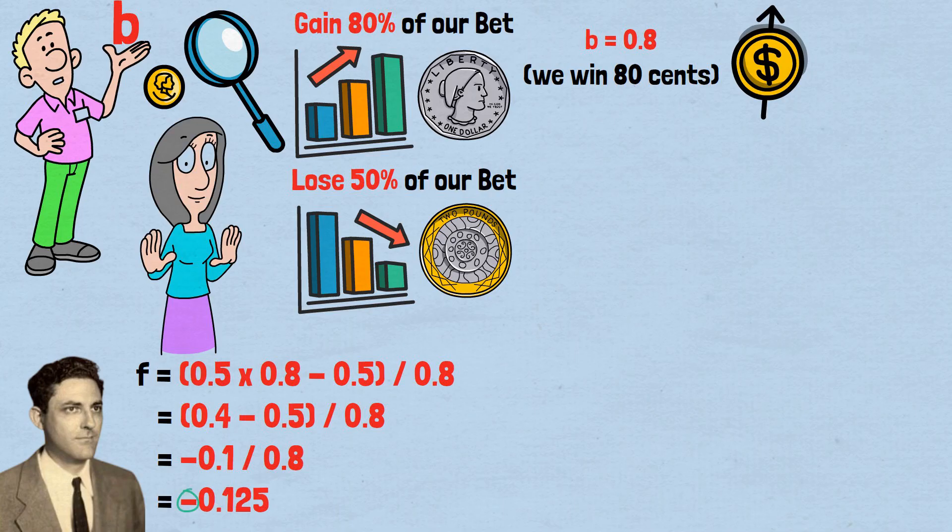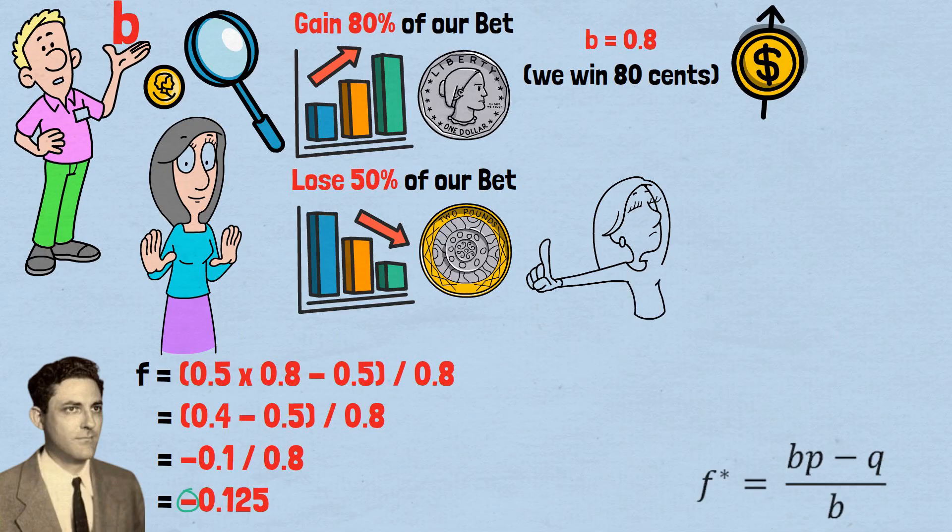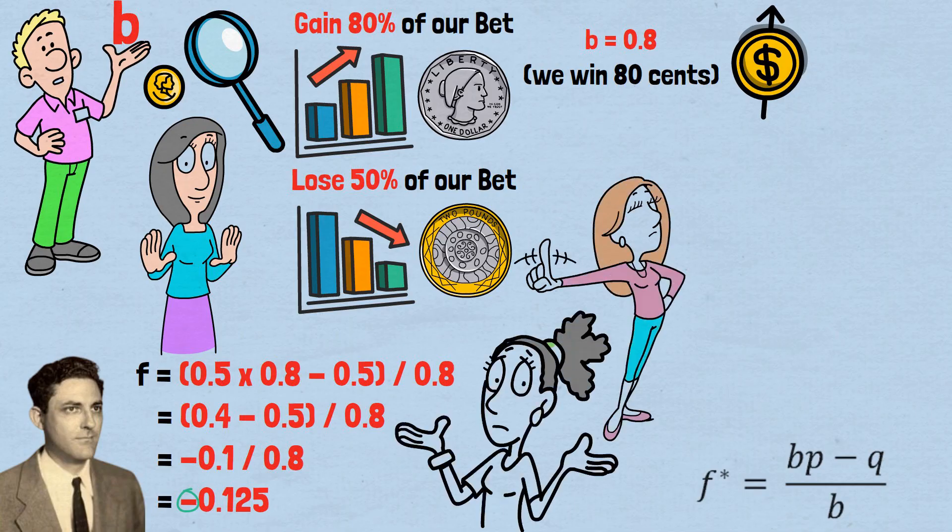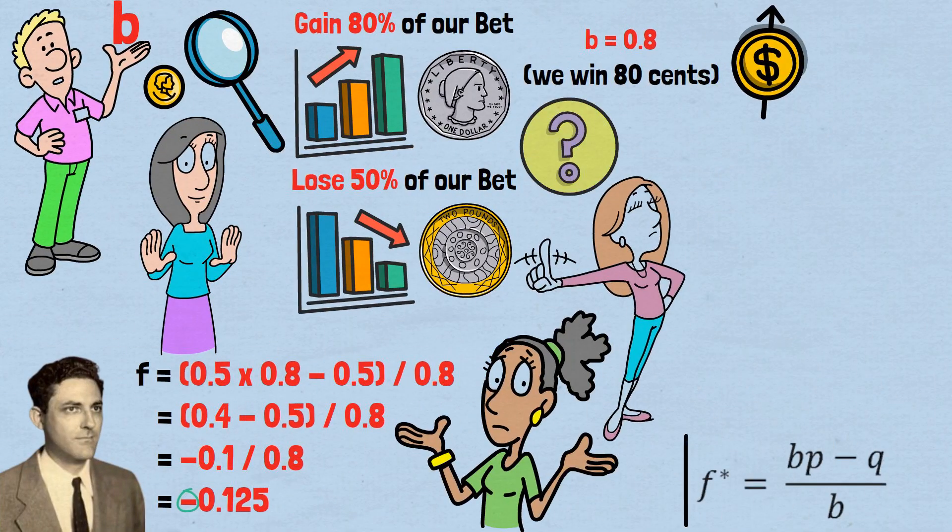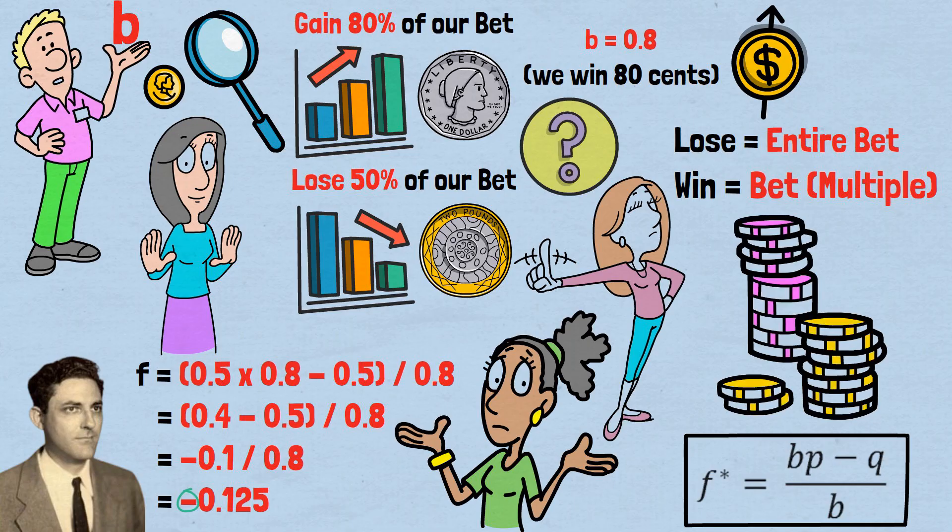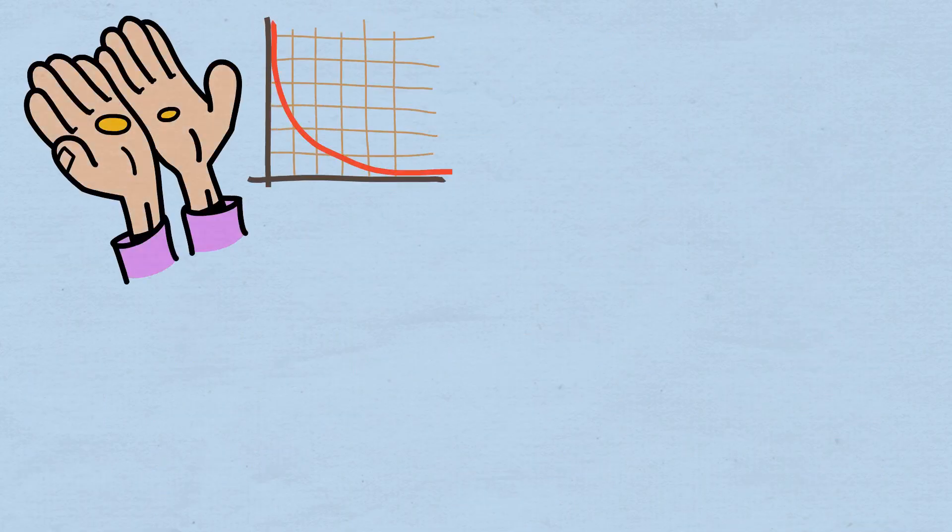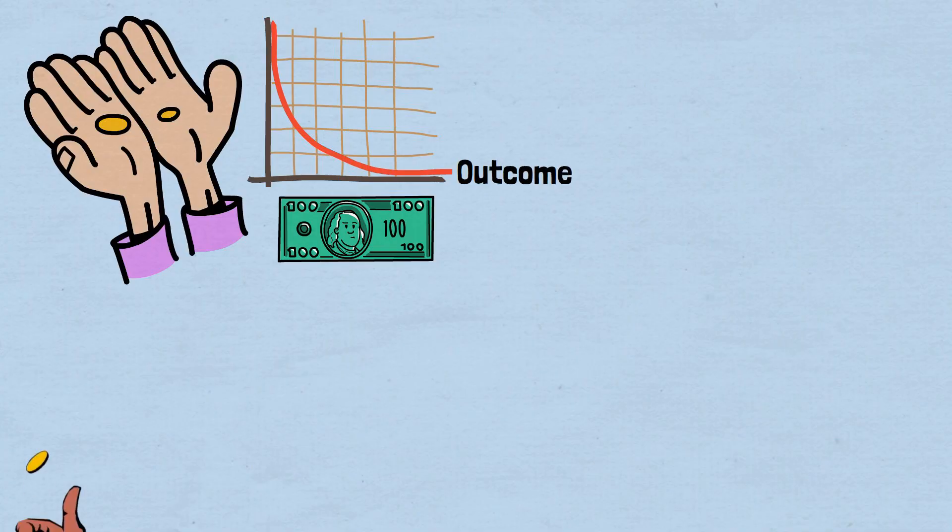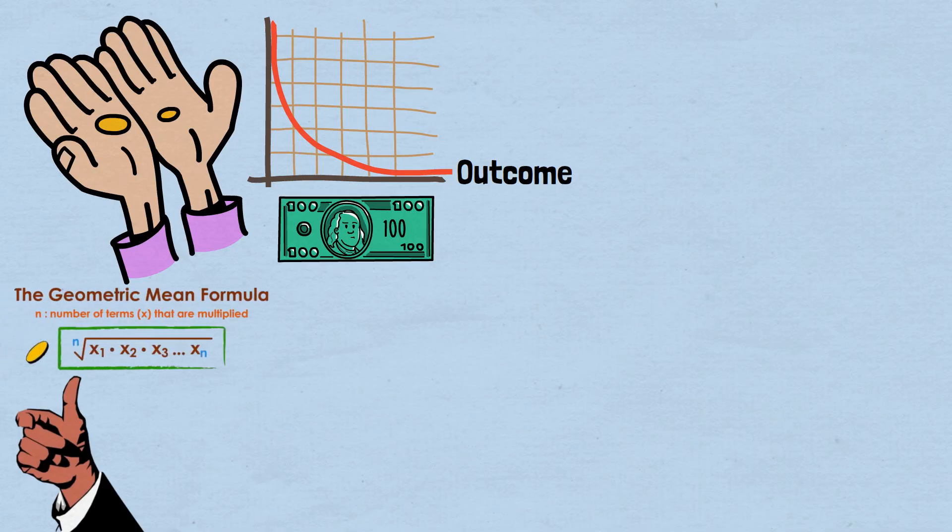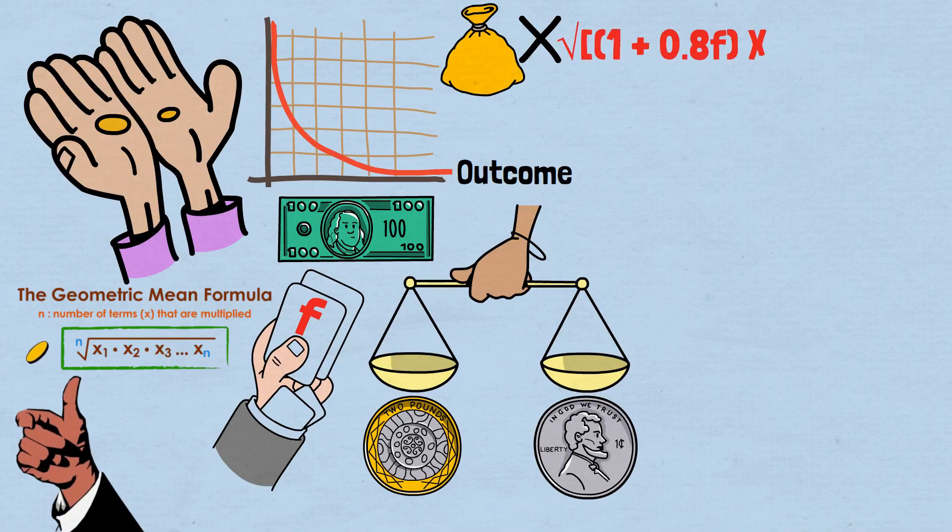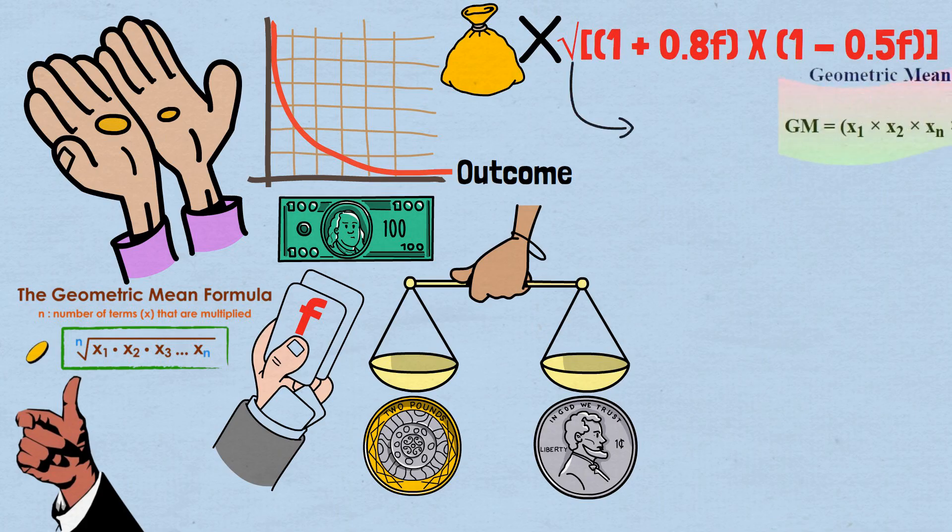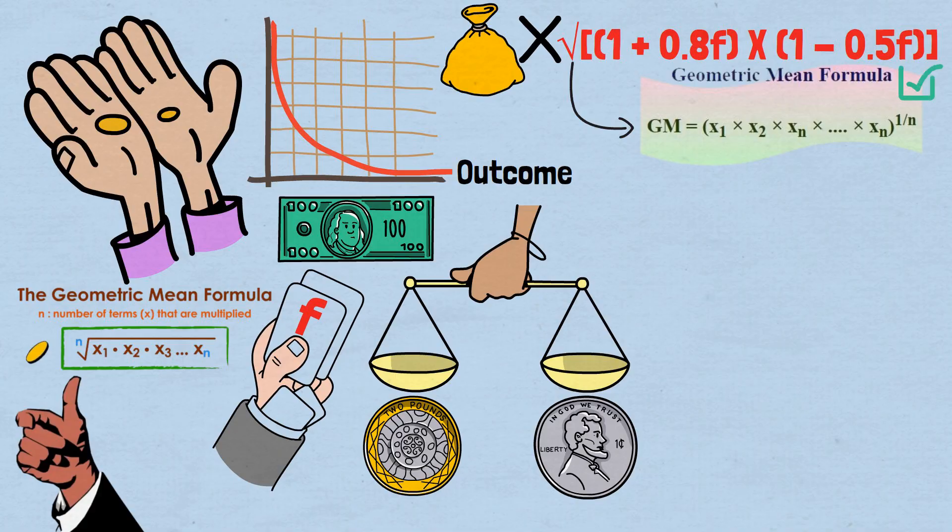Wait, this gives us a negative fraction. This means Kelly's traditional formula is telling us not to play this game at all because it's fundamentally unfavorable. But we discovered earlier that fractional betting can make this game profitable. What's going on? The issue is that Kelly's original formula assumes we win a fixed multiple of our bet and lose our entire bet, like in traditional gambling. Our coin game is different. We can lose more or less than our entire bet depending on the outcome. For our specific game, we need to use the geometric mean approach.